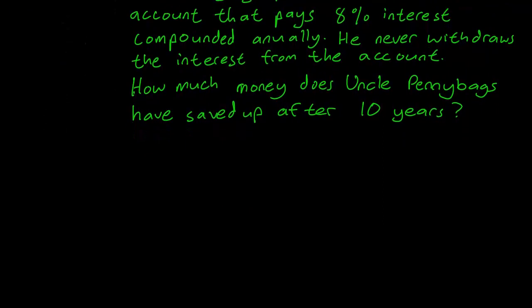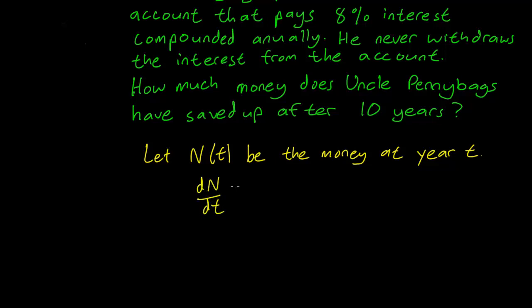Let N be the money in the account at year T. According to the information we have, the rate of change of the amount of money with respect to time is going to be 8% of the money in the account.